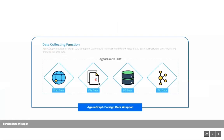AgensGraph also has a Foreign Data Wrapper that gives users the ability to transfer data from different sources — web data, file data, different databases, or big data sources such as Hadoop — directly into AgensGraph, enabling modeling, processing, and querying of that data.